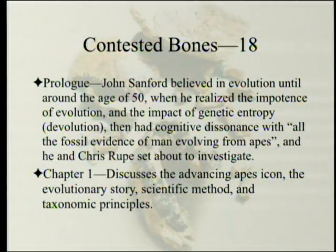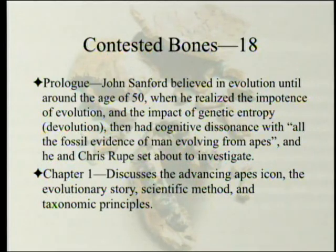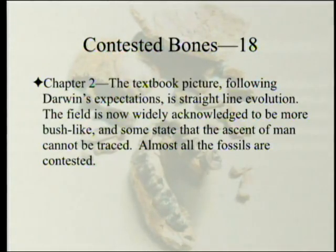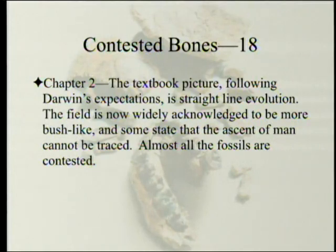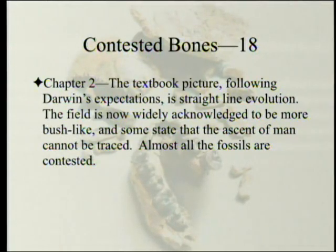Chapter one lays some groundwork, discusses the advancing apes icon, the evolutionary story, scientific method, and taxonomic principles. Chapter two — the textbook picture following Darwin's expectation — is straight-line evolution. The field is now widely acknowledged to be more bush-like. Some state that the ascent of man cannot be traced. These are people who believe there was an ascent of man; it's just too confusing. Almost all the fossils are contested.